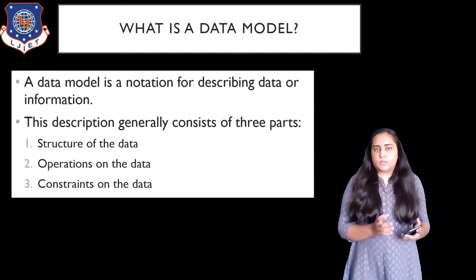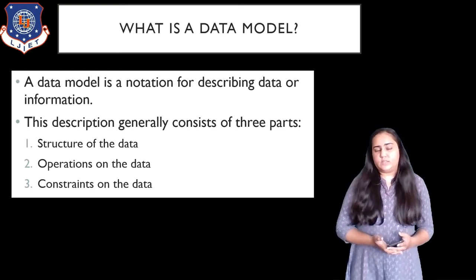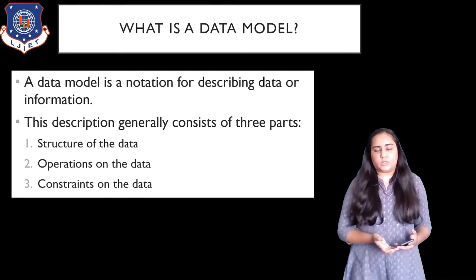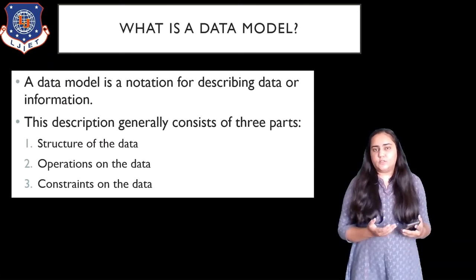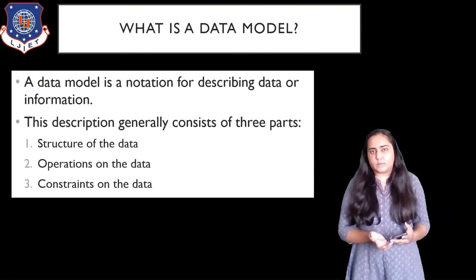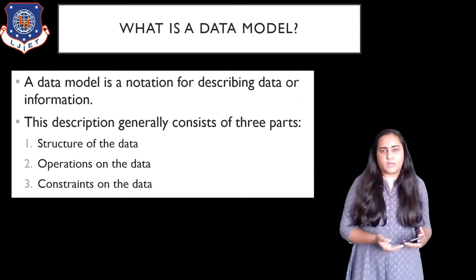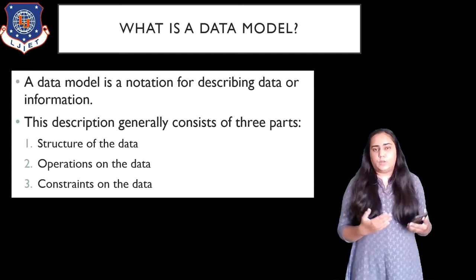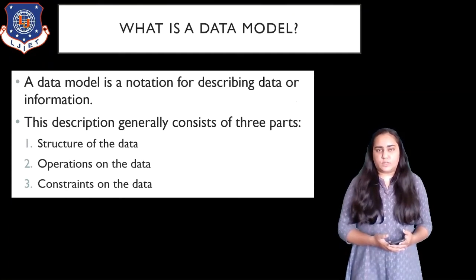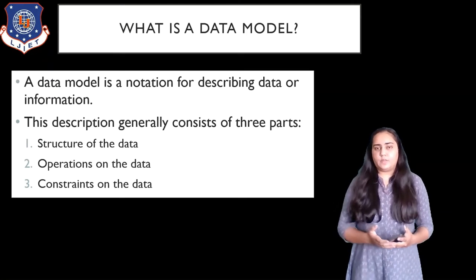The description that the data model gives shows you what the structure of the data is, how the data is related with each other, and what kinds of operations you can perform on that data. Constraints are rules that are applied on the data — they tell you what kind of data you can insert and what kind of data is not allowed. Those rules are known as constraints, and all these things are represented in a diagram using a data model.